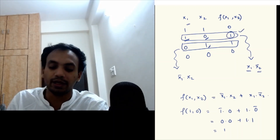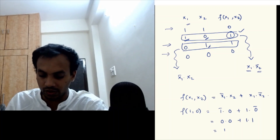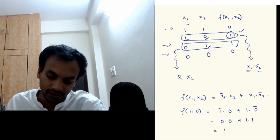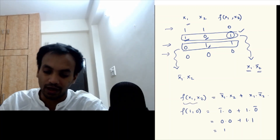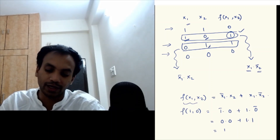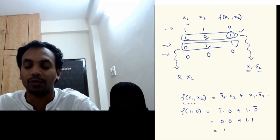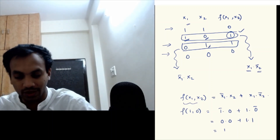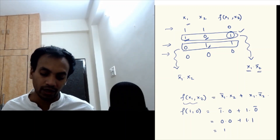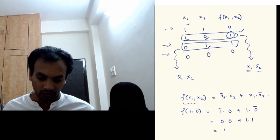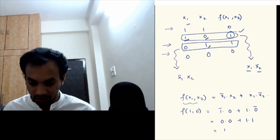You can similarly check for each of these rows by plugging the values into f and you should get 0, 1, 1, 0 respectively for all four combinations. This is the algorithmic way to write a formula for every function, and it is done in detail in the last video.